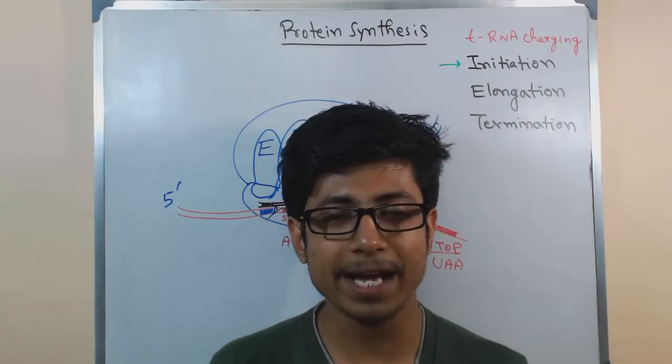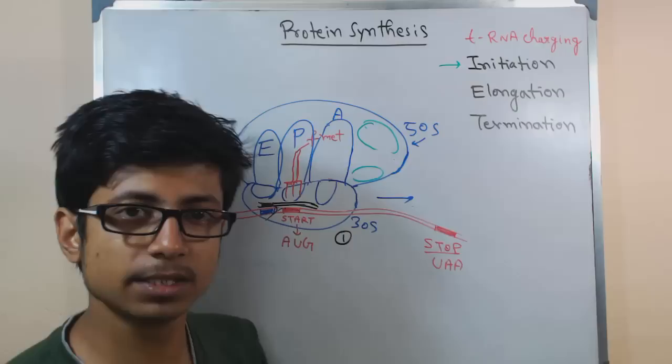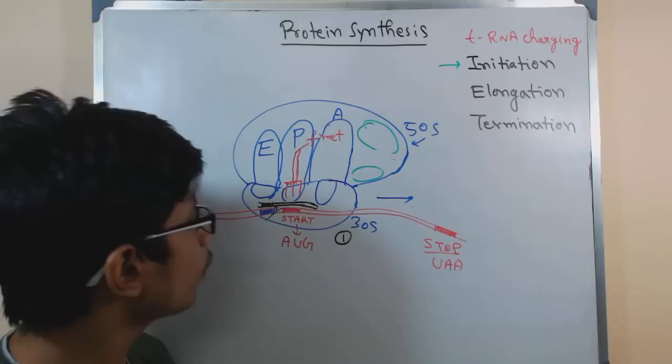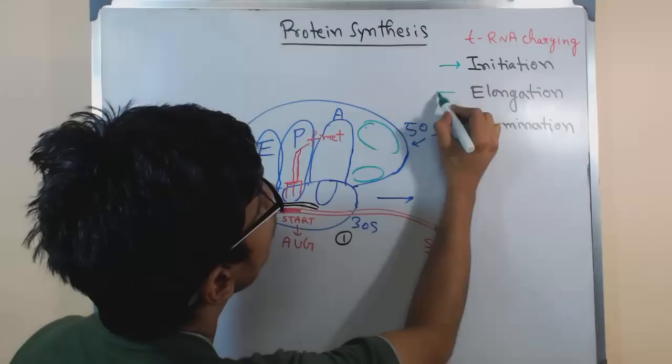Welcome back. We are talking about the translation or protein synthesis in prokaryotes. We have seen the first stage, the initiation phase of protein synthesis, including the formation of the 30S initiation complex and then the 70S initiation complex. That was the ultimate stage of the initiation phase. Now we will be talking about the elongation stage of protein synthesis.